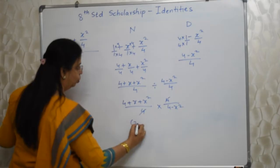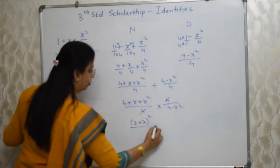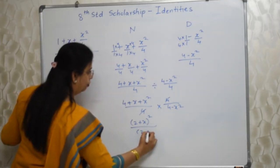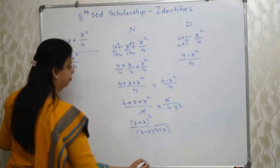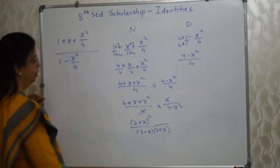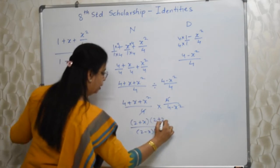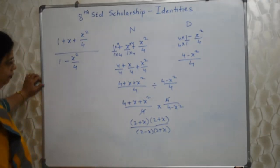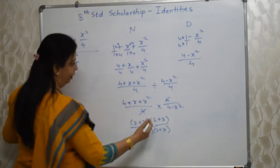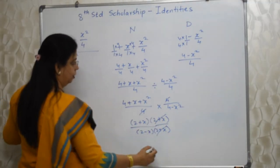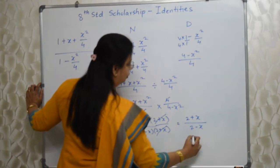The numerator is the expansion of (2+x)² and the denominator is the expansion of (2−x)(2+x). Writing the numerator as (2+x)², that is 2 times 2 times (2+x), meaning (2+x)² over (2−x)(2+x). The common factor (2+x) cancels, so what remains is (2+x) on top and (2−x) on the bottom. This is our answer.